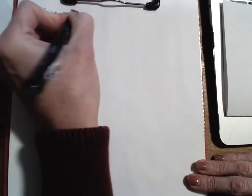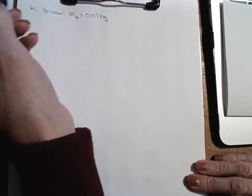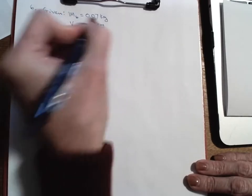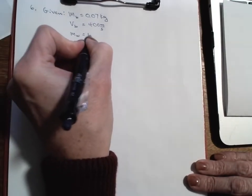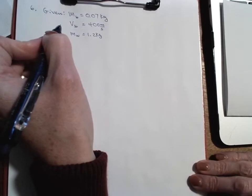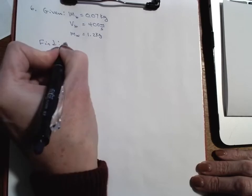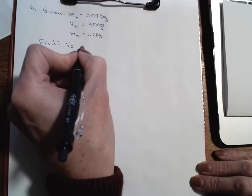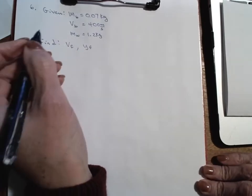Our givens: the mass of the bullet is 70 grams, which is 0.07 kilograms. The velocity of the bullet is 400 meters per second. The mass of the wood is 1.2 kilograms. We're looking for the final velocity and the height y-final, and we'll need to do energy bar charts.